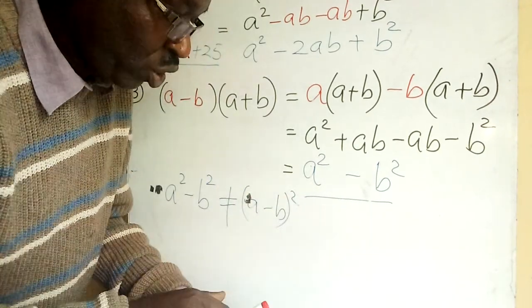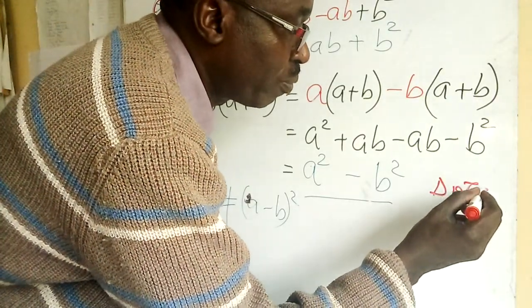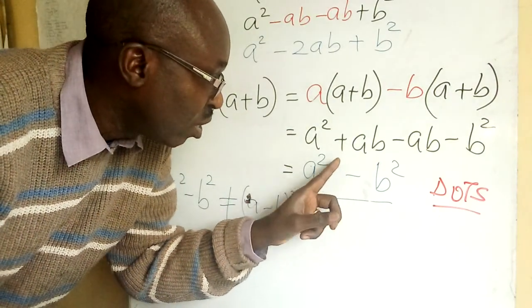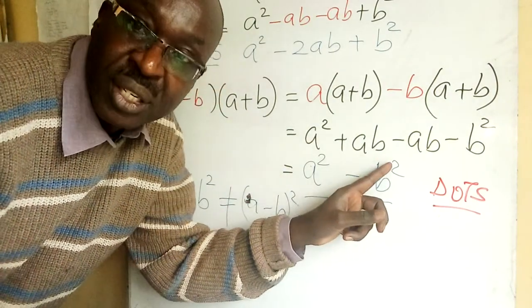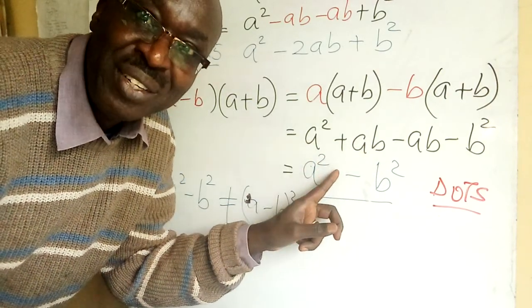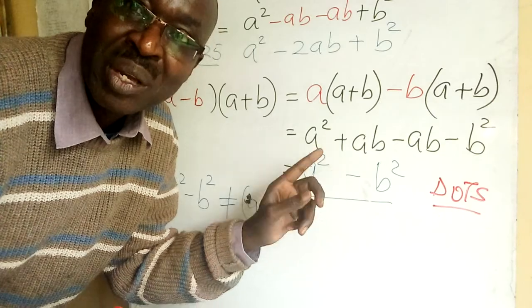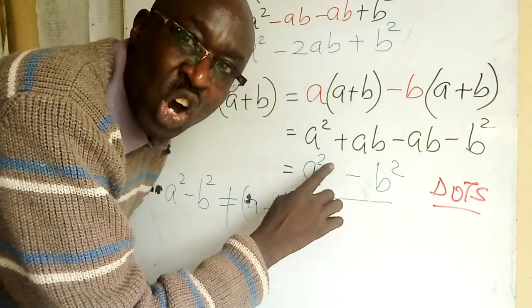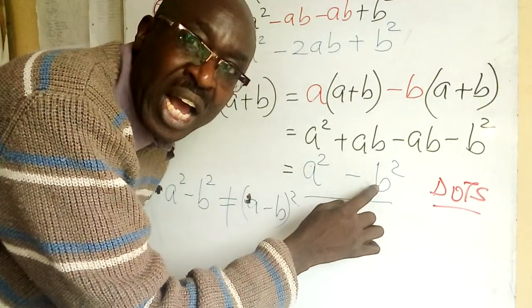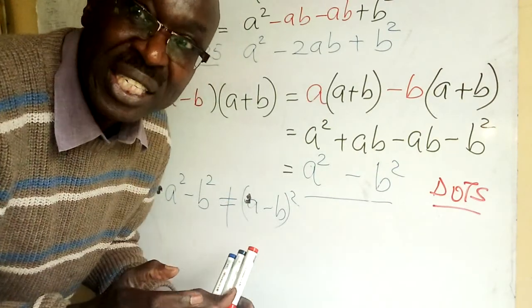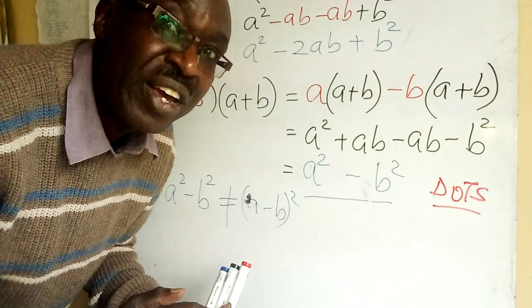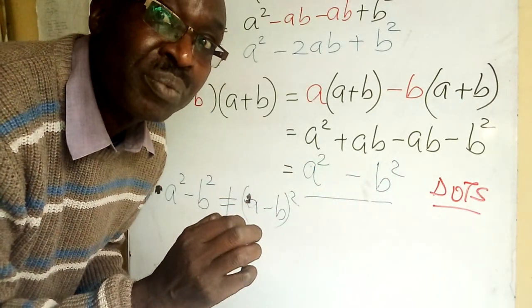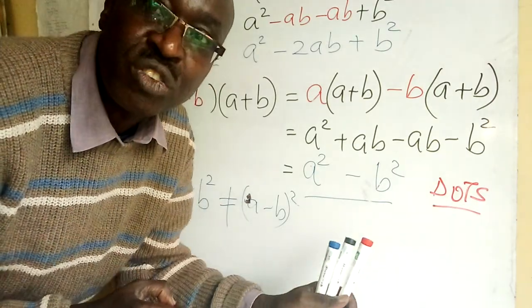This is what we call DOTS in short form. So when you hear me talking of DOTS, it is this. This is the difference of the two squares. Difference is a minus, a subtraction between two factors which are squared. Subtraction of two factors a and b, and both of them are squared. By extension to any even power it works, so long as this power is even it works. A difference of two squares, short form: DOTS.